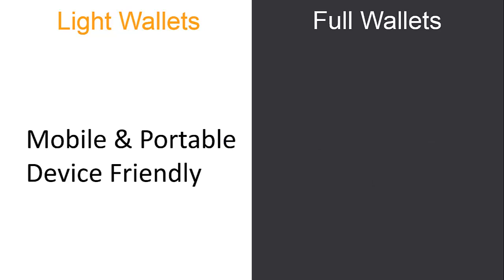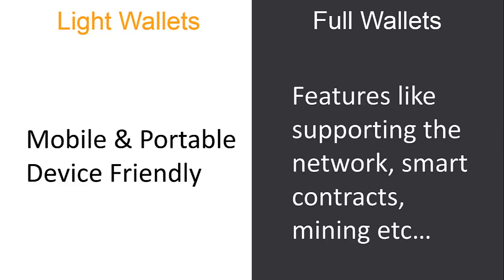The biggest advantage of light wallets is that they are mobile and portable device friendly. Most wallets we use on desktop and phones are light wallets because they don't need huge storage and are easy to set up. Full wallets, on the other hand, offer additional features: since downloading a full wallet is essentially running a node, it supports decentralization, and can also be used for writing smart contracts and mining.